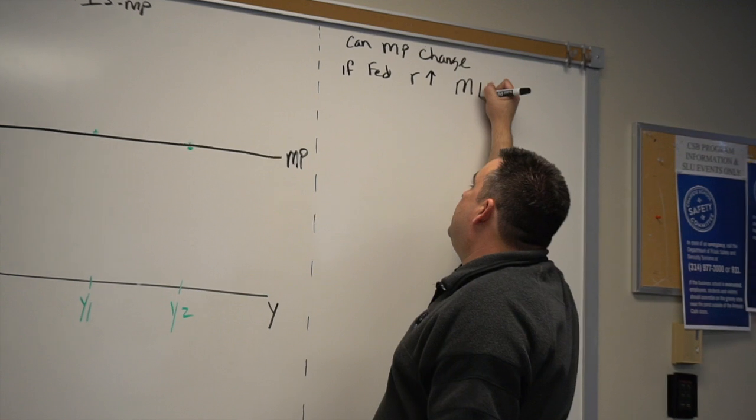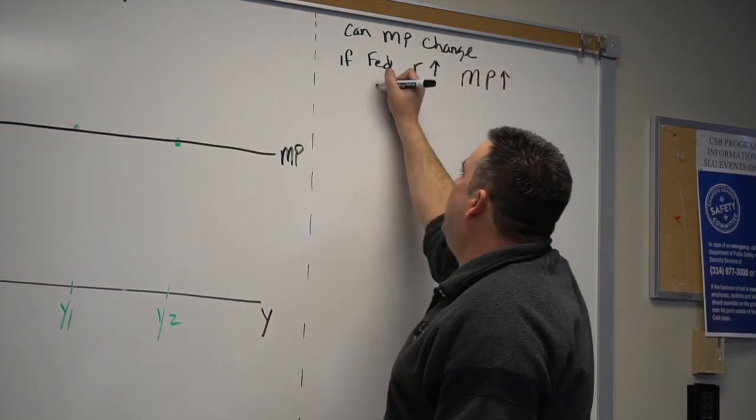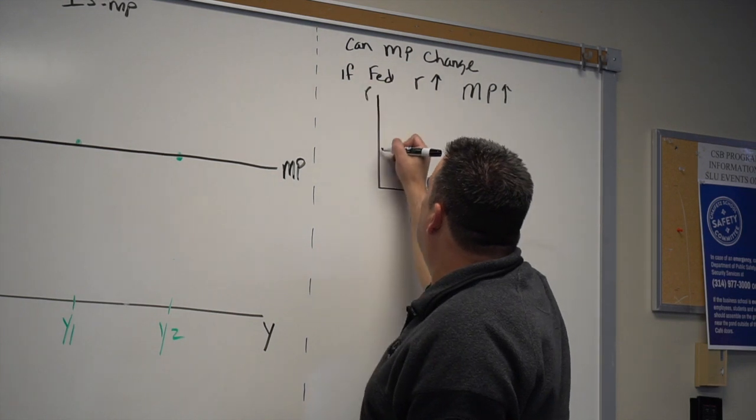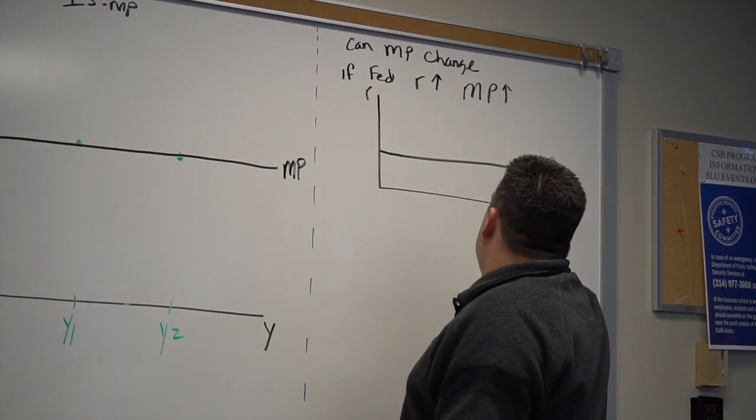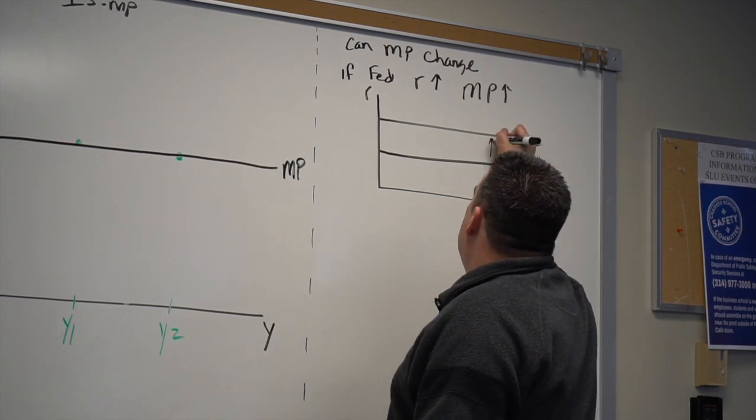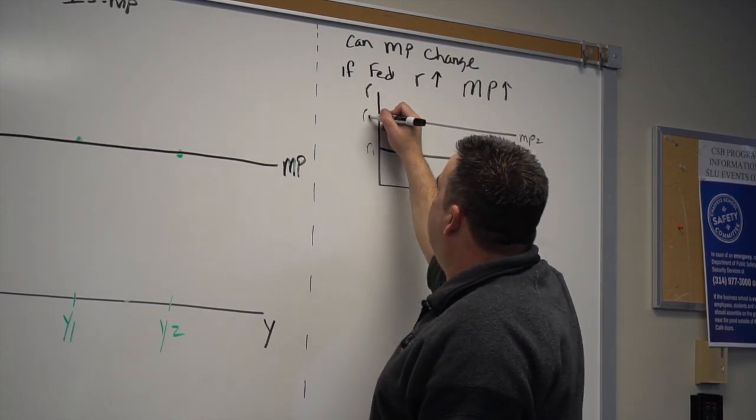So if the Fed wants to raise the interest rate, it would raise the MP function. Right? That's easy to show in a graph. Hopefully that looks horizontal, as the interest rate went from R1 to R2.